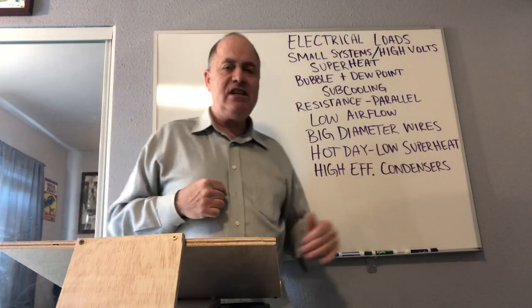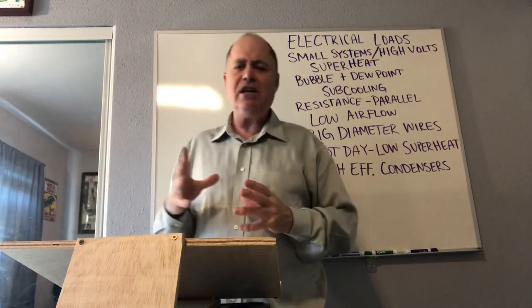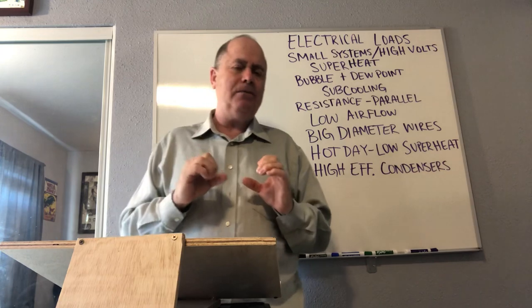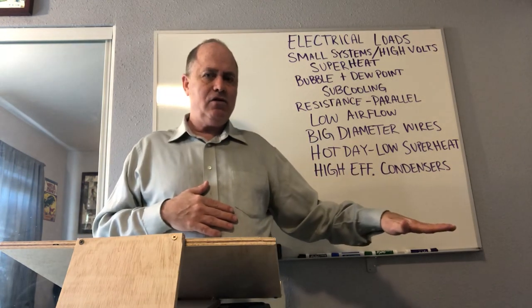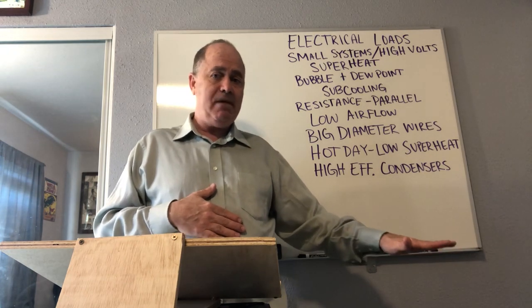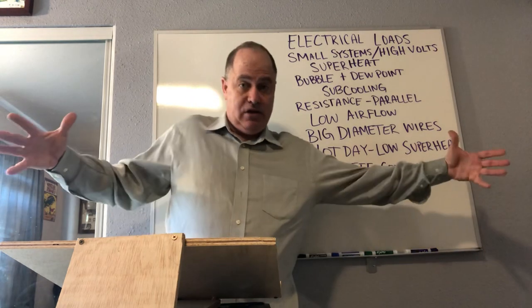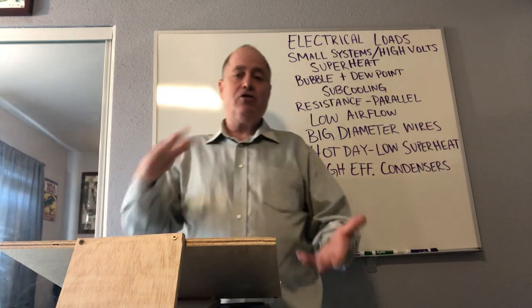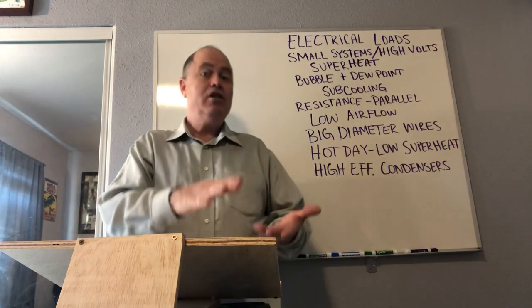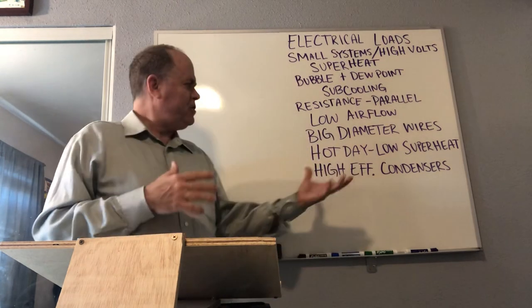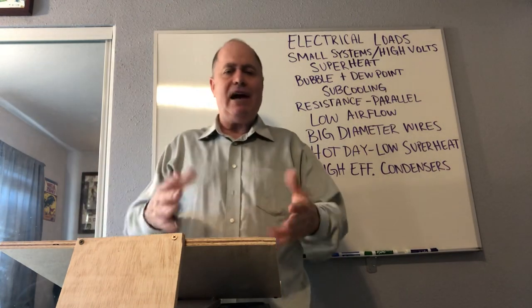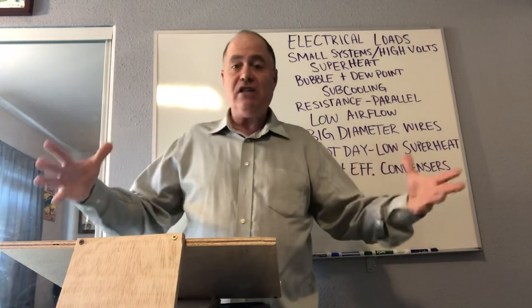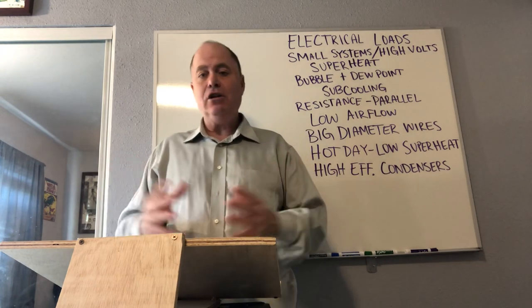High efficiency condensers are actually bigger. Usually we think high efficiency things get smaller — especially with computers and electronics and communication, everything gets smaller and smaller. But 20 to 25 years ago, a 5-ton condensing unit would be a certain size; now a 5-ton condensing unit is much larger, because you need more surface area. The more surface area, the more heat you can get rid of in the condenser, the lower your head pressure, the lower your compression ratio, the lower your amps, and the more efficient the condensing unit is. So high efficiency condensers for the same tonnage are actually bigger — the opposite of what you might think — because you need the surface area for heat transfer. That concludes the opposite lecture.